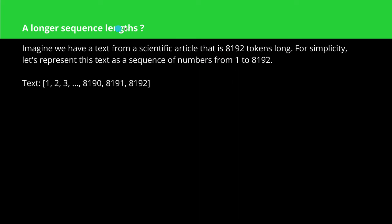Before going to the new theory, let's ask a simple question: what does a long sequence length of our LLM mean and how do we handle it today? Simple example: a scientific article about 6,000 words long — roughly 8,192 tokens. For simplicity, let's say this text is a sequence of numbers from 1 to 8K. If we take a classical LLM with a sequence length of 2,000 tokens and our text has 8K tokens, we split it into groups.